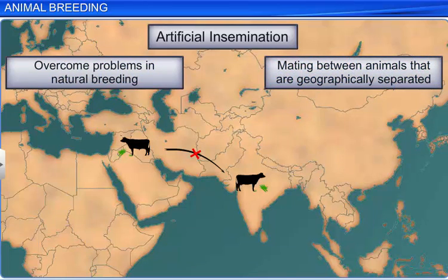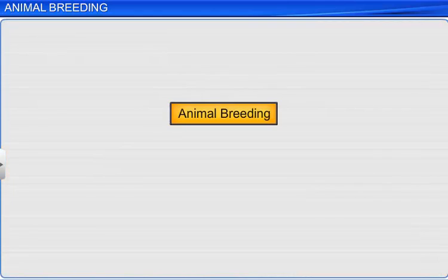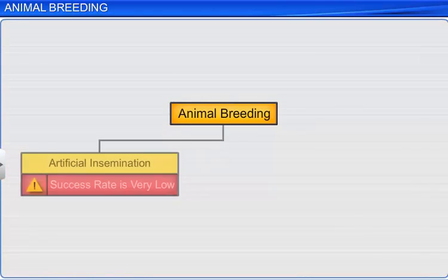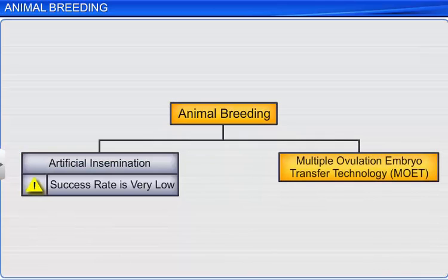However, the success of animal breeding using artificial insemination is low, and so new techniques like multiple ovulation embryo transfer technology, or MOET, were developed.